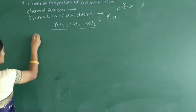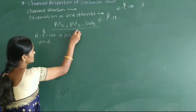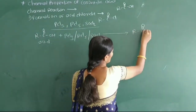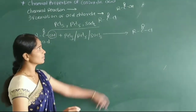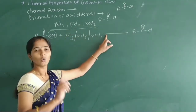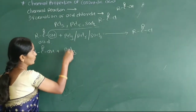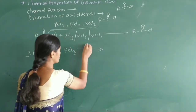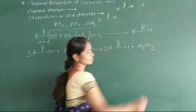Now we see the general reaction of acyl chloride from carboxylic acid. First, this acid reacts with phosphorus trichloride (PCl3). Three molecules of acid react with PCl3, giving three moles of RCOCl plus H3PO3 as a byproduct.